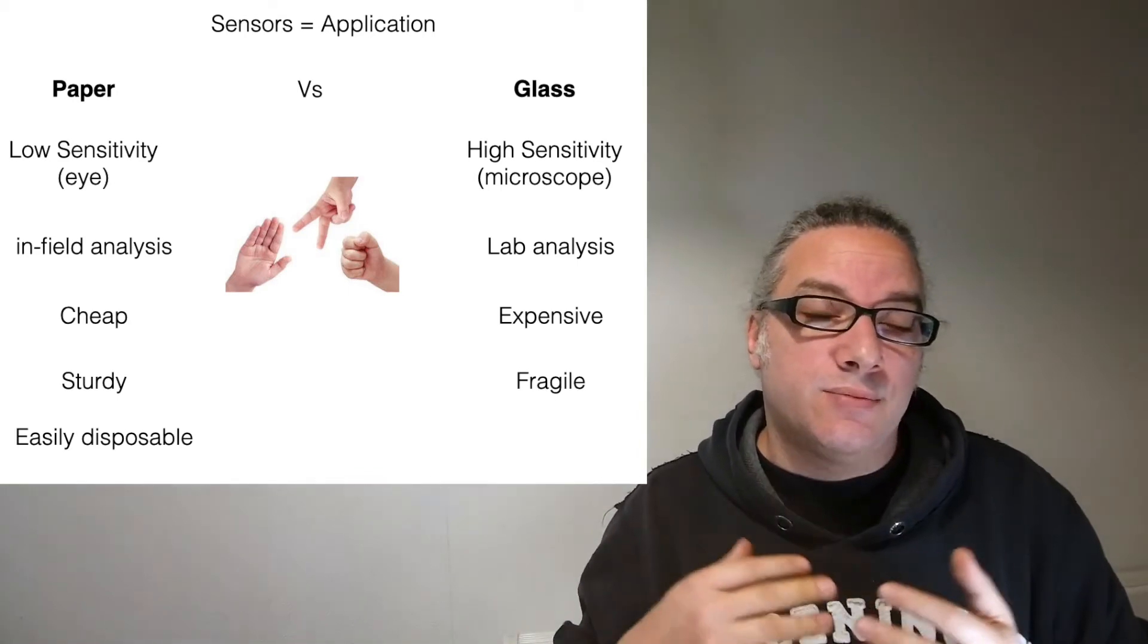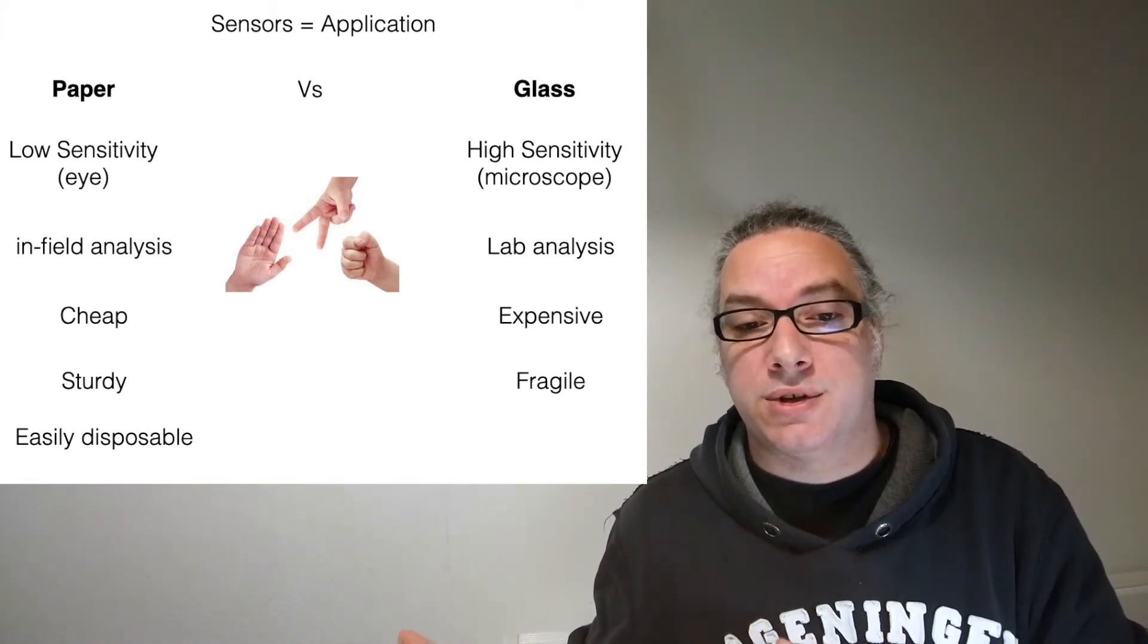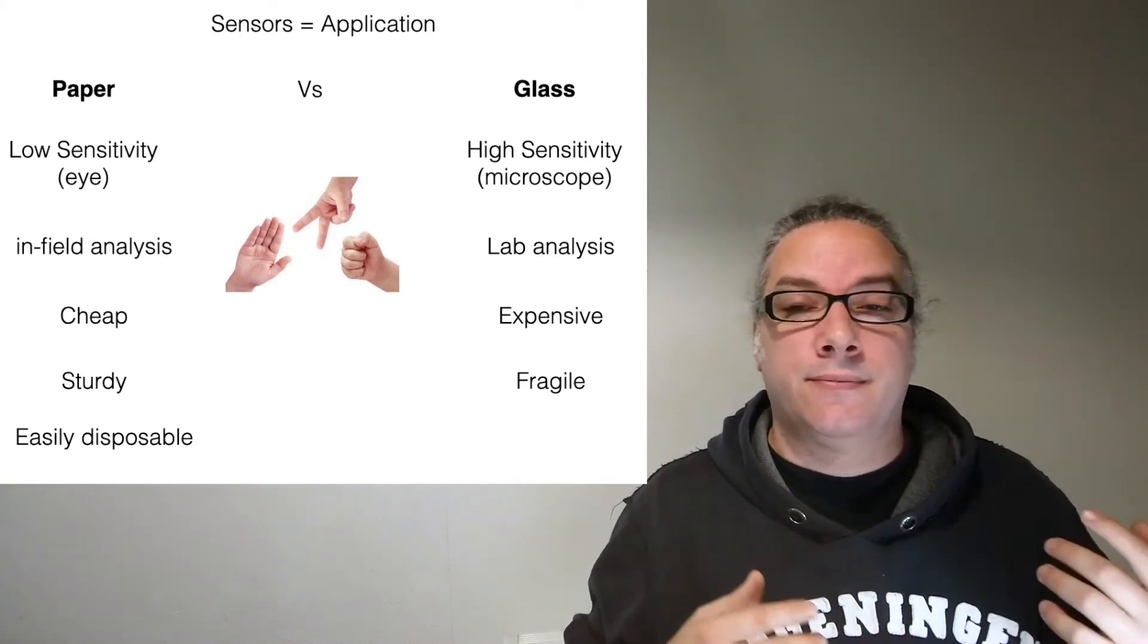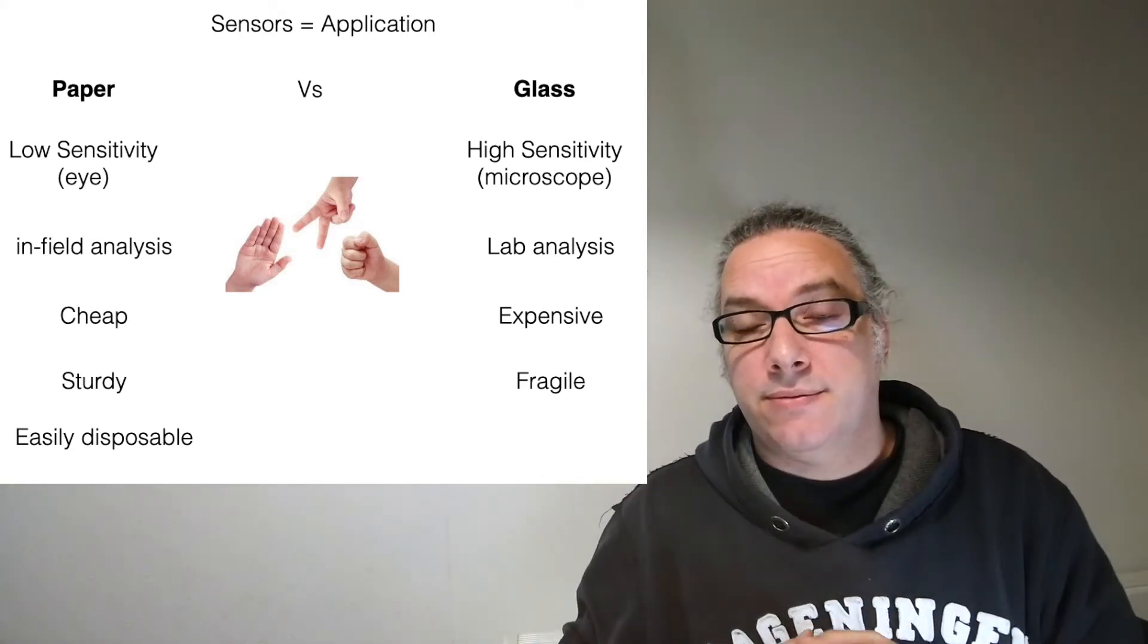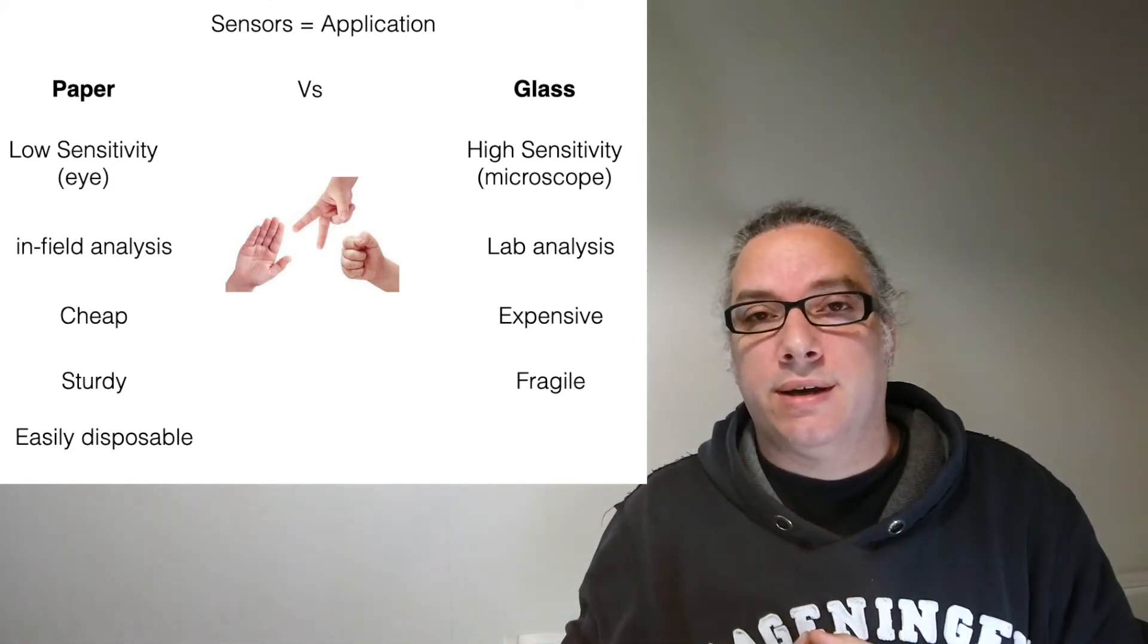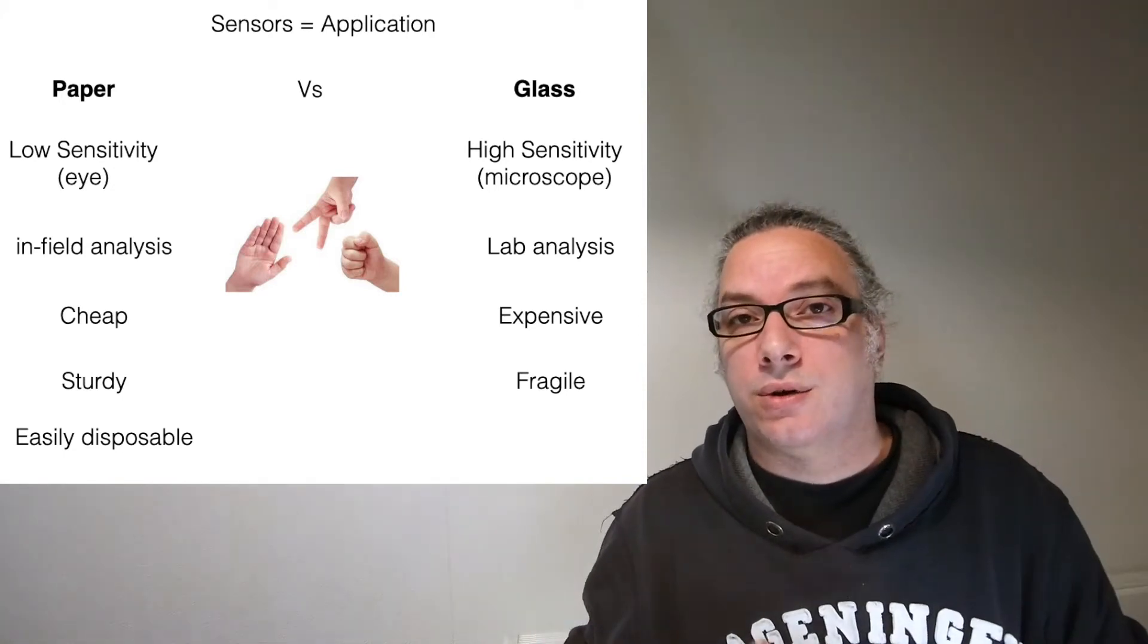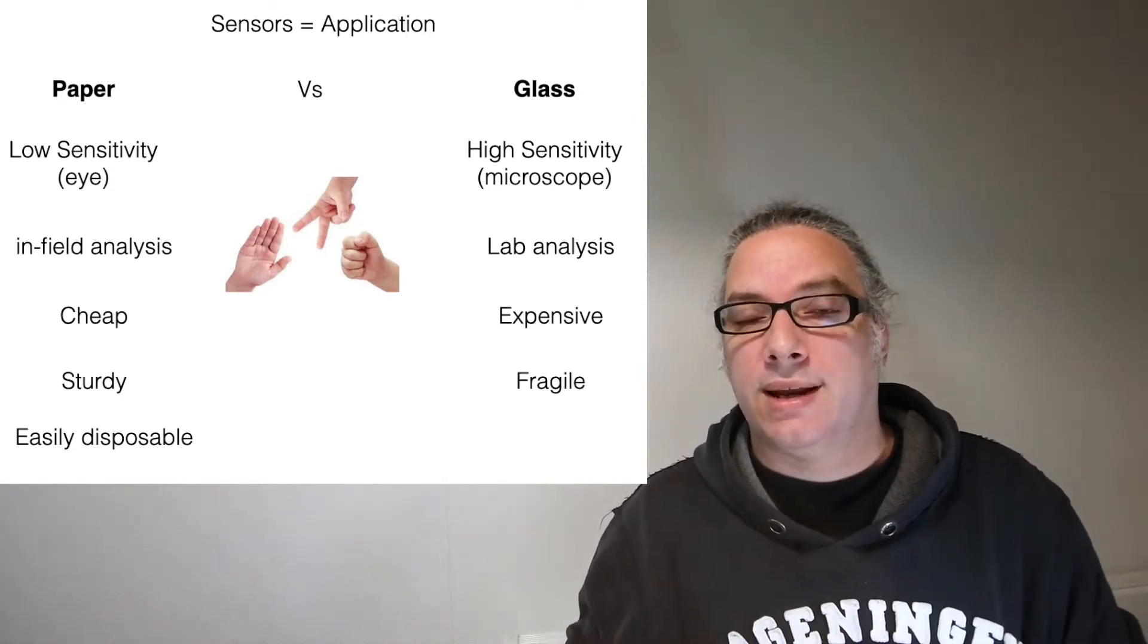Glass on the other hand is more fragile but you have a high sensitivity because you can use the microscope. Then it's way more sensitive than the paper sensor. It's expensive because modifying, although the chemistry is similar, modifying it is more expensive. You need more resources and definitely it's fragile. I cannot throw it from an airplane and hope that the glass survives.